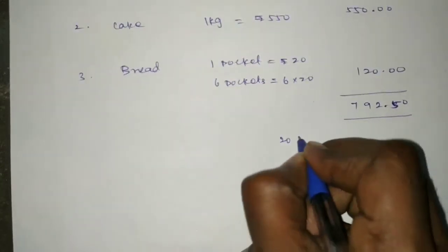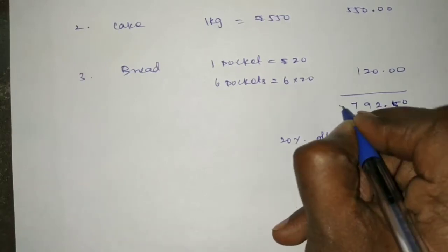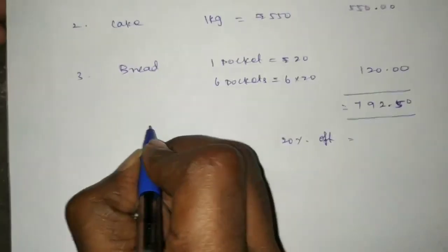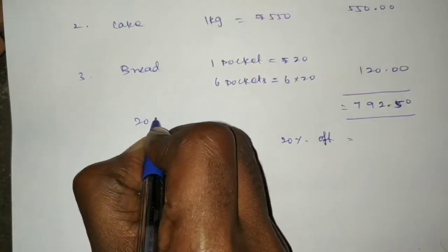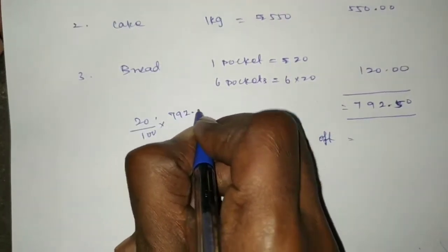Now we have a 20 percentage offer. We calculate 20 percent of 792.50, which is 20 divided by 100 multiplied by 792.50.